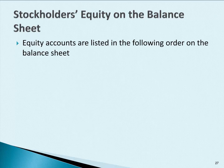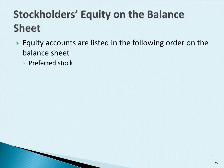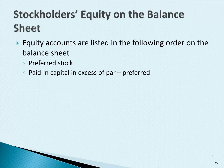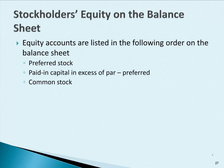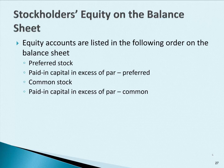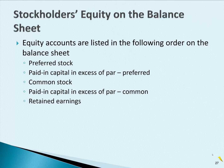So let's look at how the stockholders' equity looks like on the balance sheet. The first account is going to be preferred stock, followed by paid-in capital in excess of par on the preferred stock. And then we list the common stock at par, and the paid-in capital in excess of par for the common stock. And then we list retained earnings.